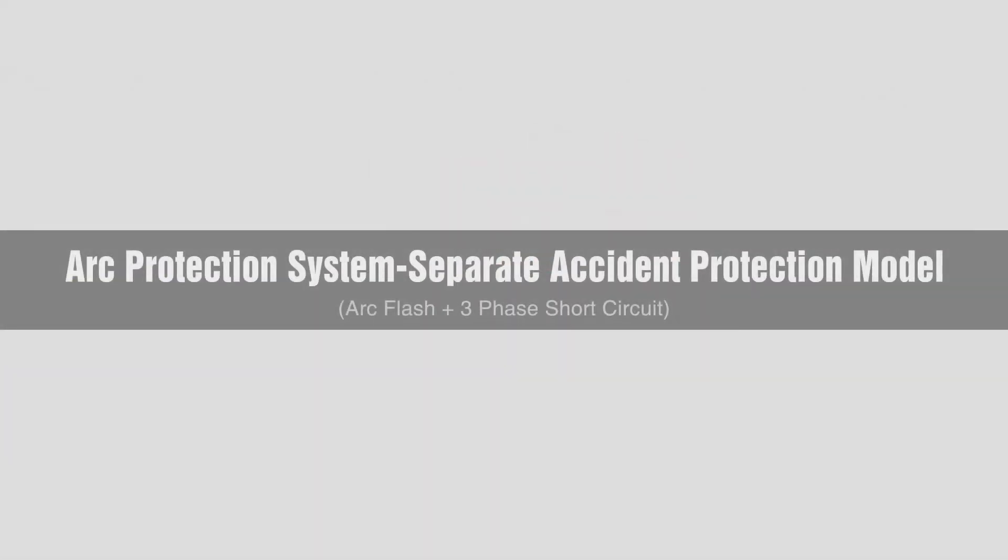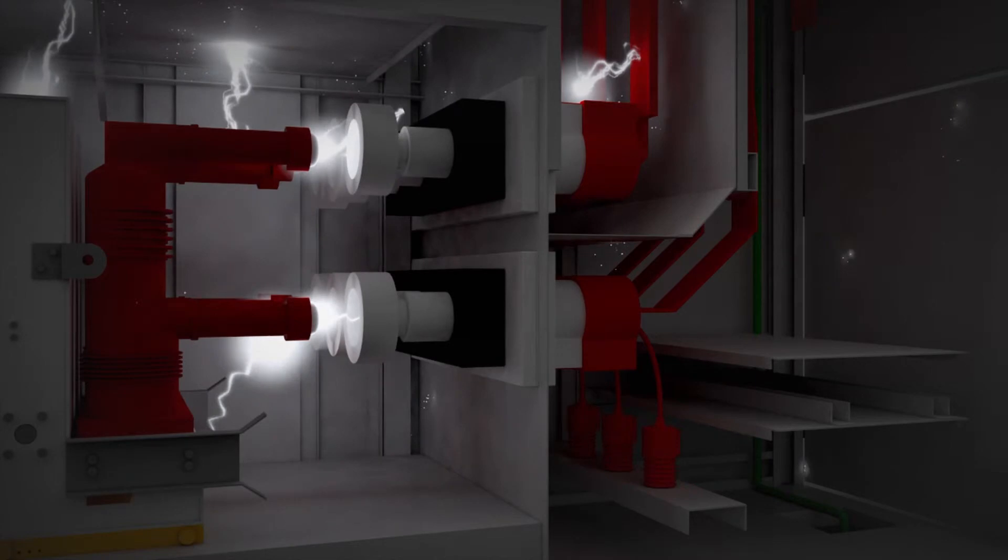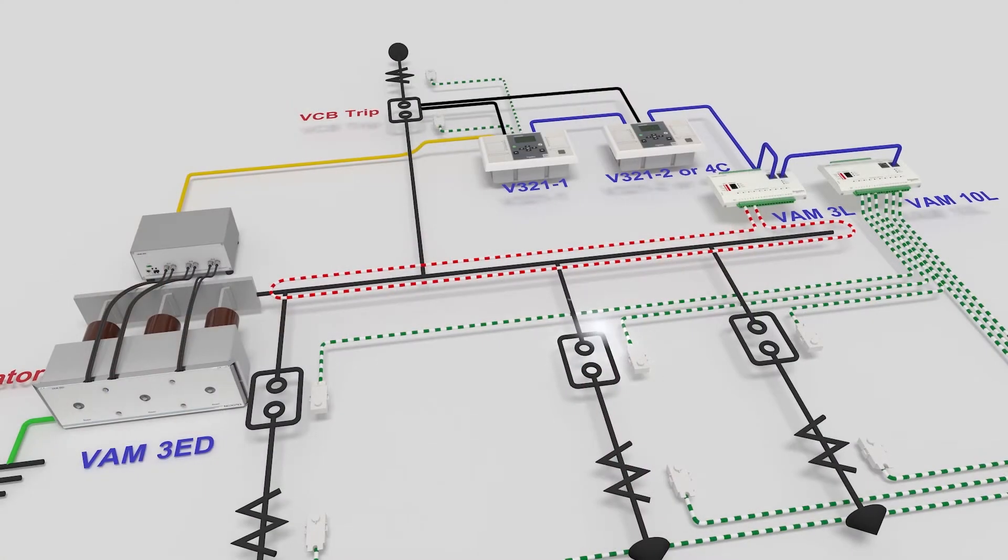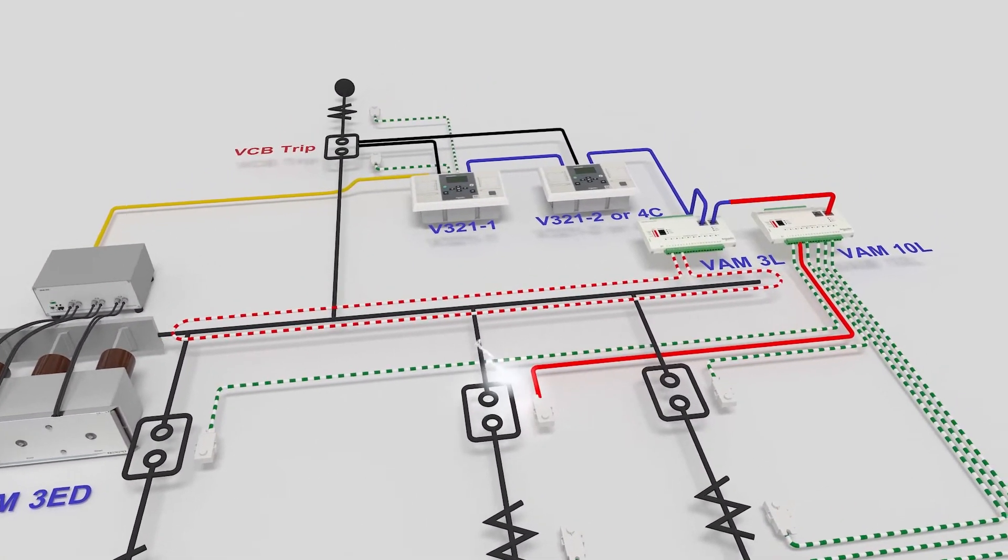In case of three-phase short circuit, it uses the arc protection relay B321 in the same operating mode as the standard type to detect the three-phase short circuits involving the maximum fault current.